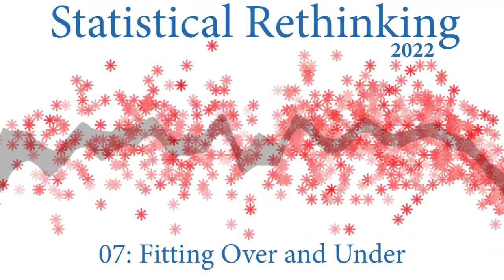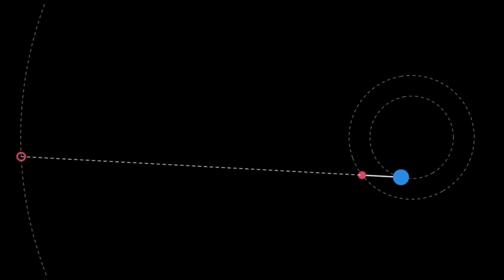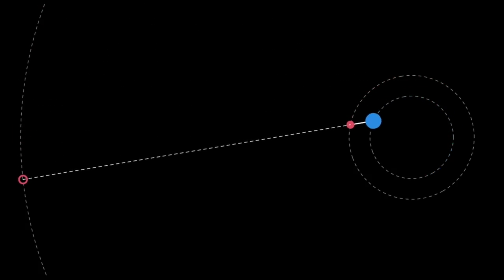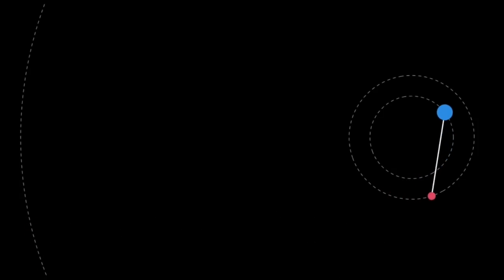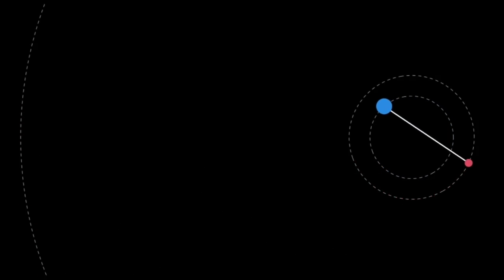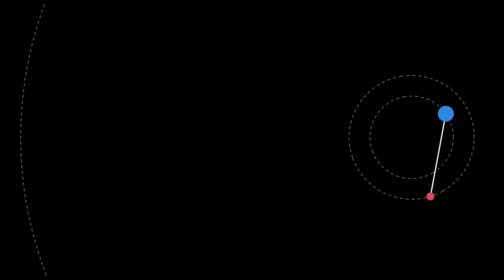Welcome to lecture seven of Statistical Rethinking 2022. We're going to rewind a little bit to get started today. Back in the third lecture in the second week, I showed you this animation as part of a story of how statistical models can produce arbitrarily accurate approximations without actually capturing the causal structure of the phenomenon at all. This is a cartoon representation of the heliocentric or Copernican model of the solar system and how it explains retrograde motion of planets like Mars in the night sky. They appear to zigzag against the background of the stars because of the ways orbits are embedded in the solar system, and planets like Earth are faster than planets like Mars and therefore pass it by, creating this illusion that Mars has changed direction in the sky.